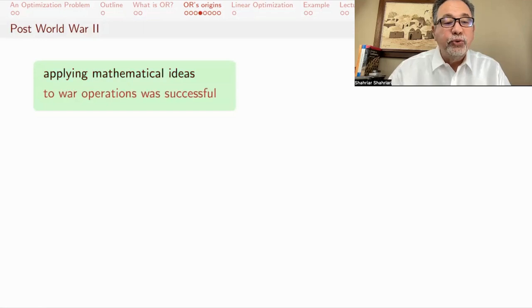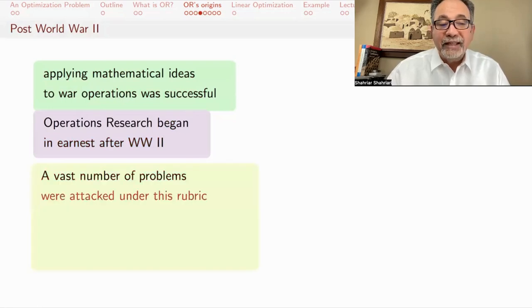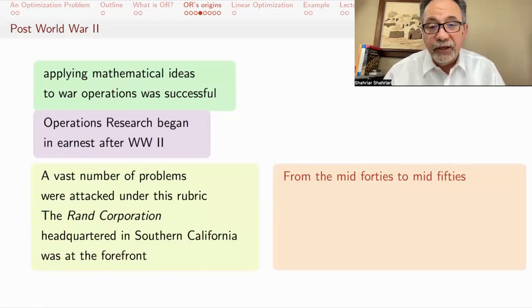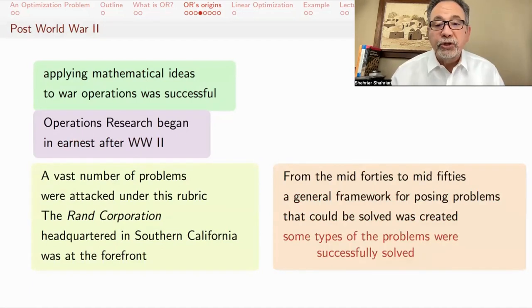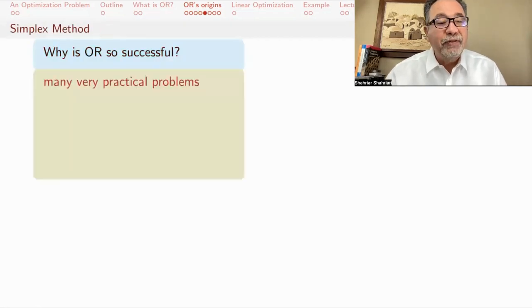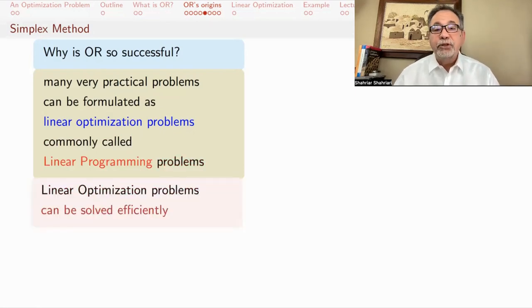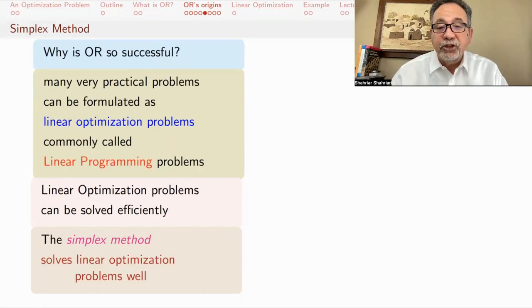Applying mathematical ideas to war operations was so successful that people started trying to use this in other venues as well. Operations research began in earnest after World War II. A vast number of problems were attacked under this rubric, and one of the places this was done was the RAND Corporation, headquartered in Southern California. From the mid-40s to mid-50s of the previous century, a general framework for posing problems that could be solved was created. Why is OR so successful? Because many very practical problems can be formulated as linear optimization problems. Linear optimization problems are commonly called linear programming problems, and they can be solved efficiently. The simplex method solves linear optimization problems well.